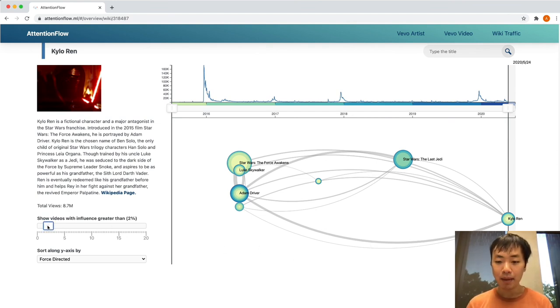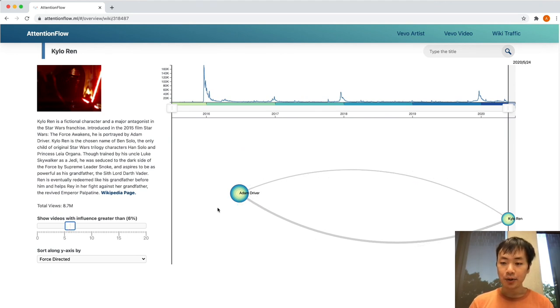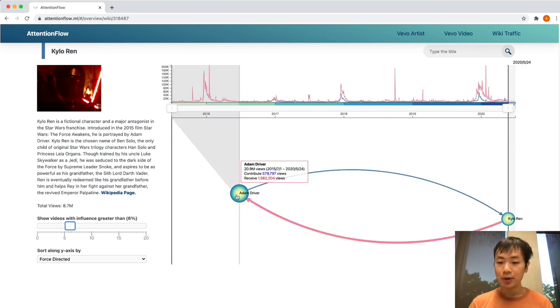If we now focus on the pair Adam Driver and Kylo Ren, we can see that from the top panel, the two time series have correlated peaks, which actually coincides with the release of new Star Wars movies. In addition, looking at the attention scores or the thickness of the edges, we can infer that more traffic is flowing from Kylo Ren to Adam Driver than the other way around.